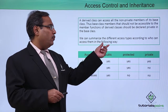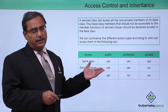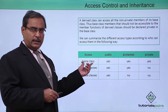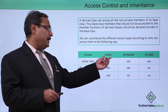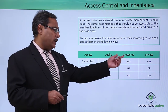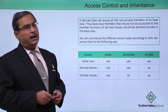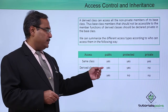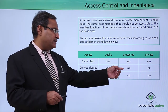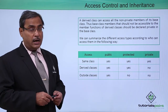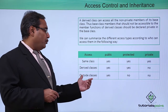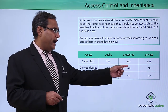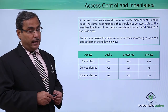We can summarize the following different access types. In the same class, public members, protected members, and private members are all accessible. In the derived class, public members are accessible and protected members are accessible, but private members are not accessible. Outside of the class, only public members are accessible; protected and private members are not accessible.